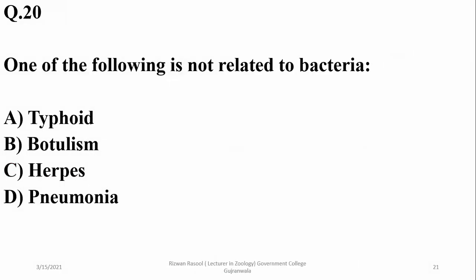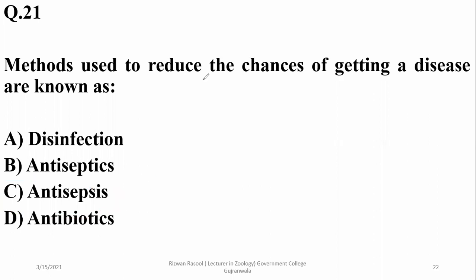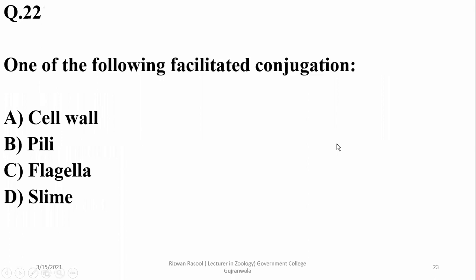One of the following is not related to bacteria: typhoid, botulism, and pneumonia are bacterial diseases, but herpes is a viral disease. Methods used to reduce the chances of getting a disease are known as antisepsis — Charlie is the right option. All those methods and techniques used to reduce the chances of getting a disease are known as antiseptic or precautionary barriers.